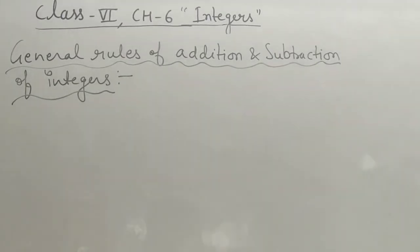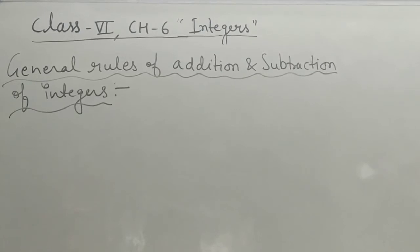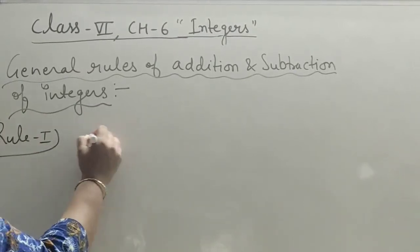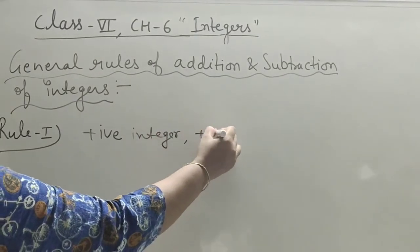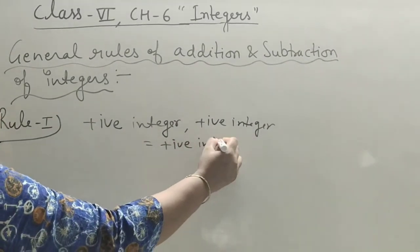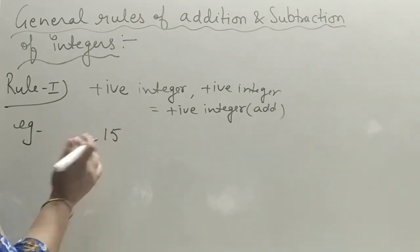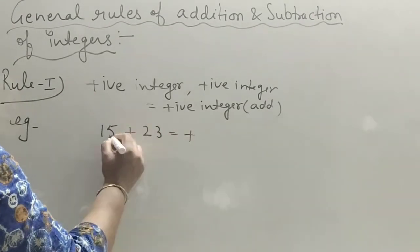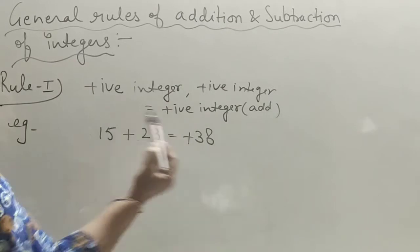Now the general rules of addition and subtraction of integers without a number line. Rule one: if both numbers are positive integers, the answer is positive. Simply add the numbers and the sign is positive. For example, plus 25 plus 13 — answer is plus 38.